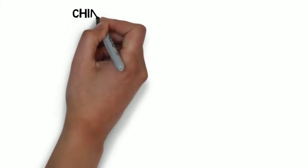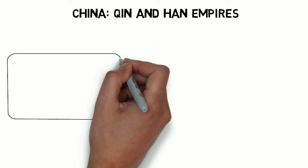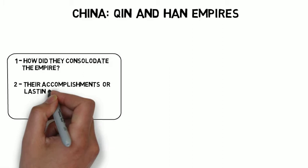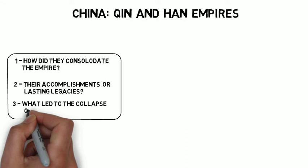Hello, kids. Today's video lecture continues our study of second-wave civilizations and will take us to East Asia, China specifically, and examines two important ruling dynasties, the Qin and Han empires. When we study empires, we need to focus on some important key factors, including how the empires consolidated themselves, how they came to power, what were their major accomplishments or lasting legacies, and what brought about the demise of the empire. This is what we will focus on for the Qin and Han empires.